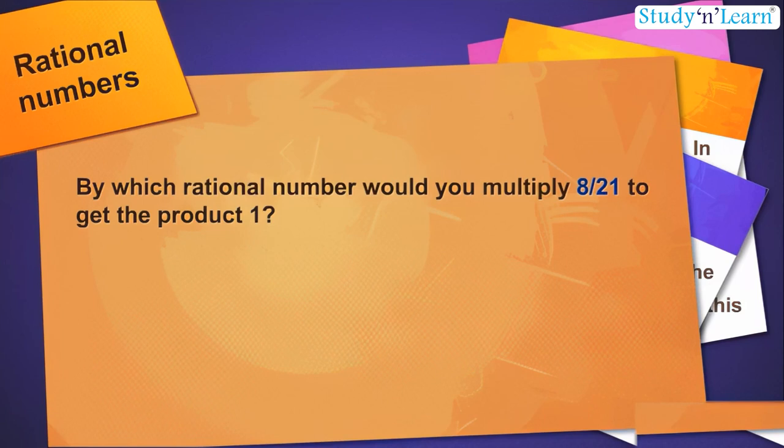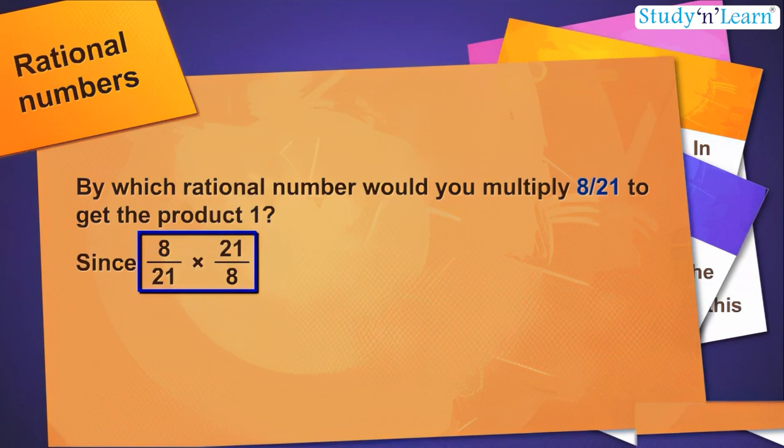Obviously, by 21 by 8, since 8 by 21 into 21 by 8 is equal to 1.